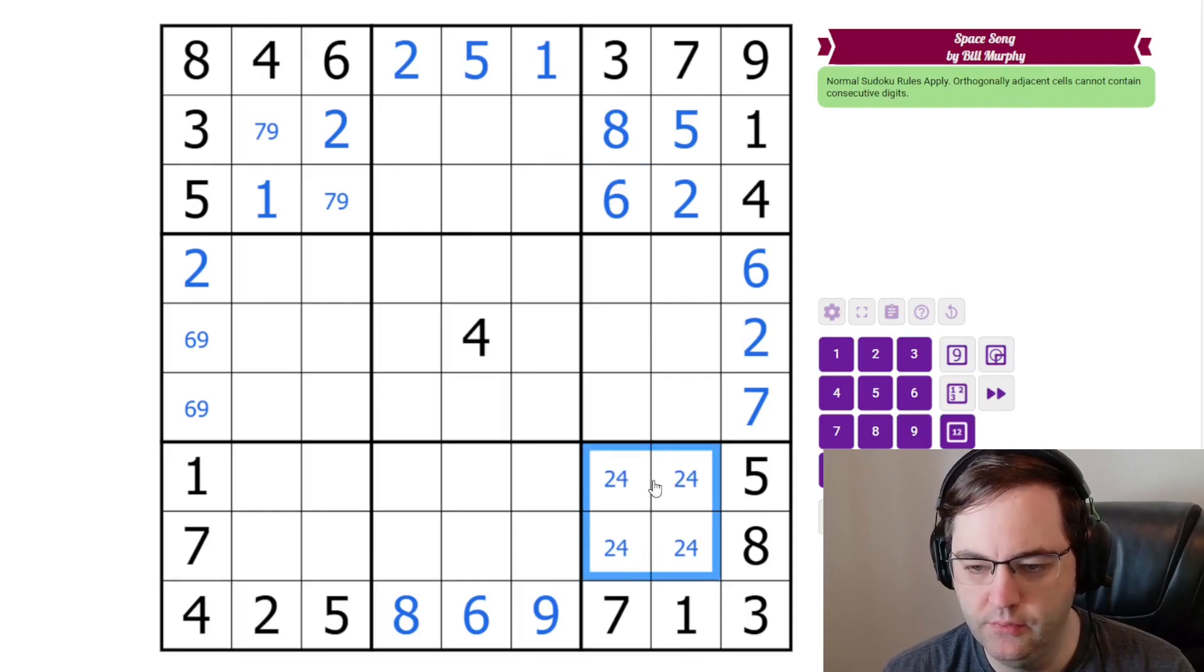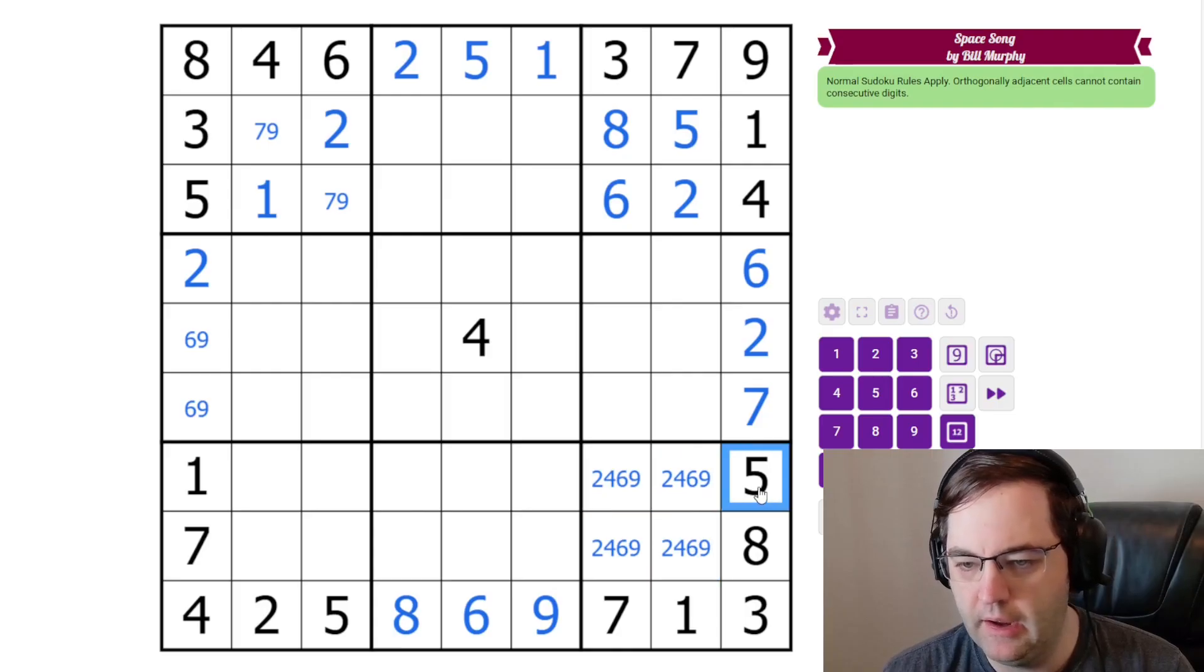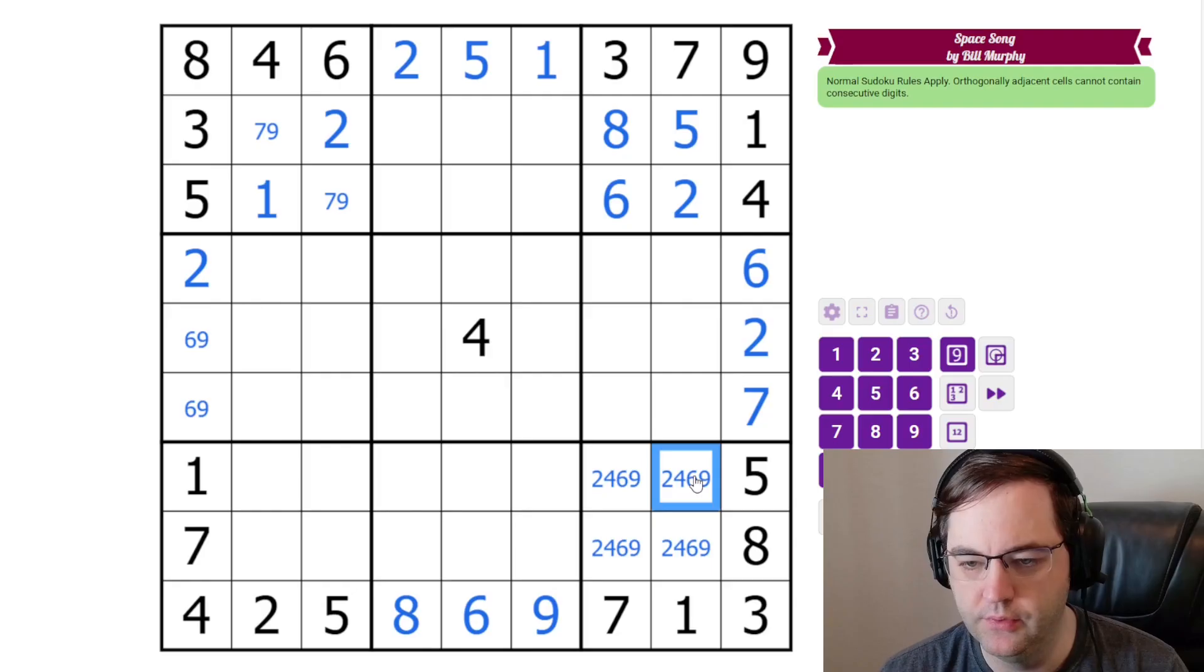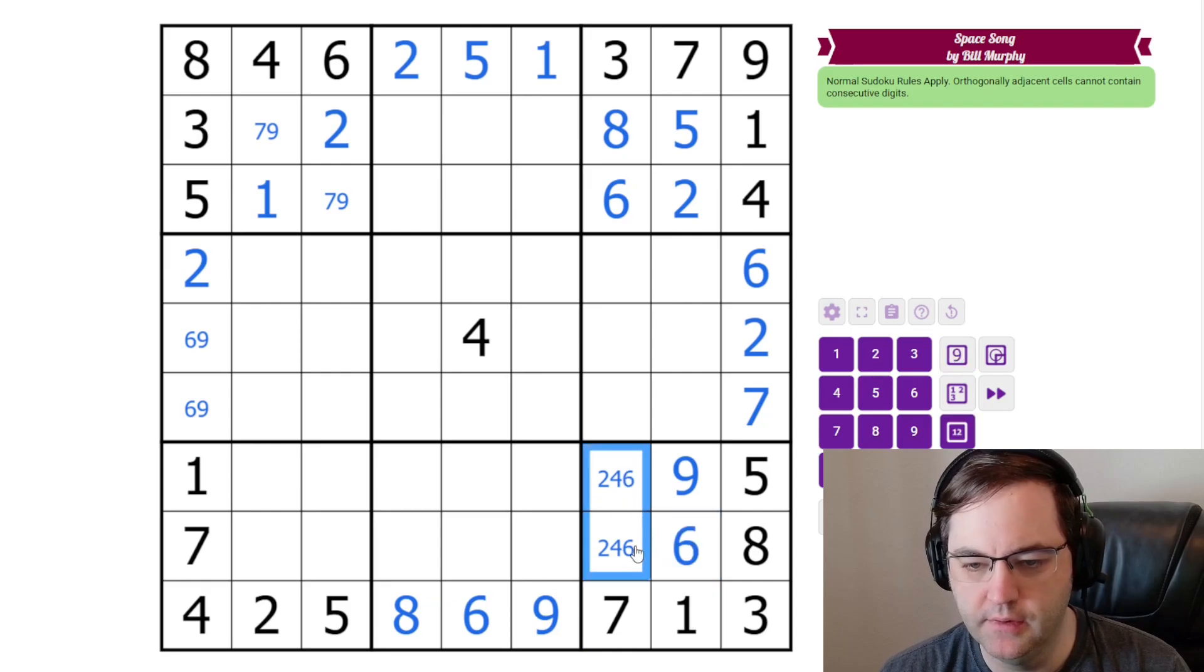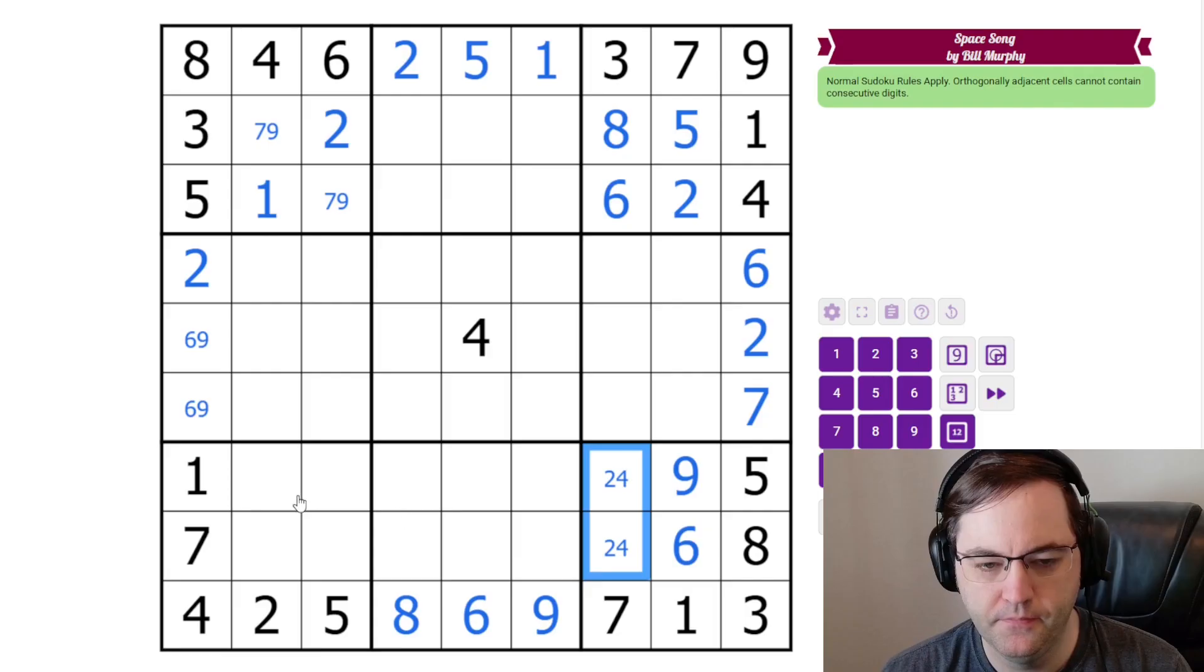Down here, we have 2, 4, 6, and 9. None of those are consecutive. However, there's 5 here. So, this can't be 4 or 6 or 2. So, this is just 9 placed. We have a 6 up here. So, this must be our 6. And the 2, 4 we can't resolve.